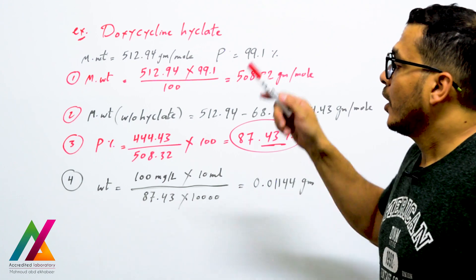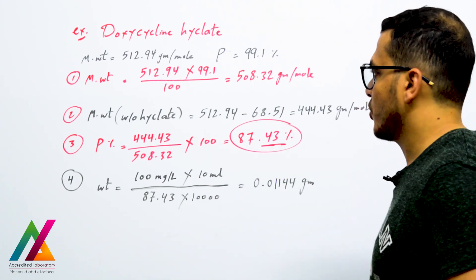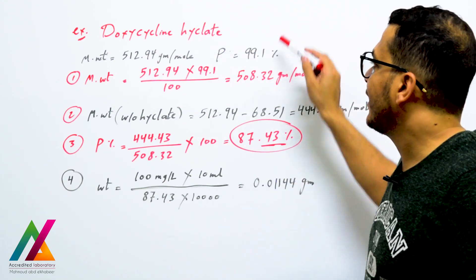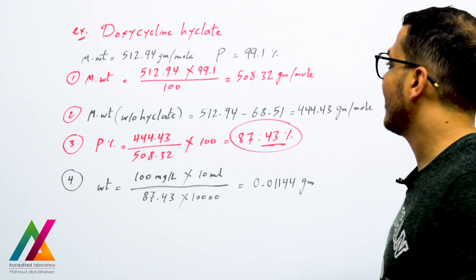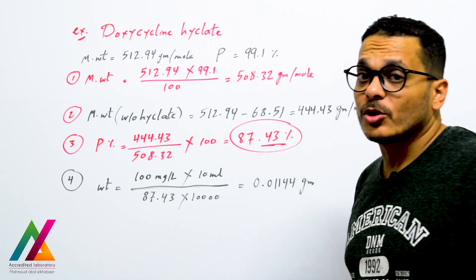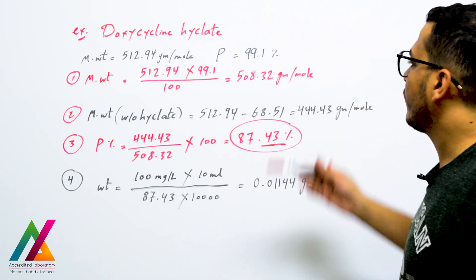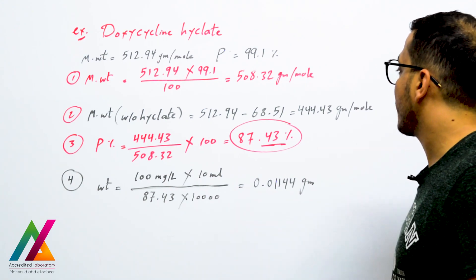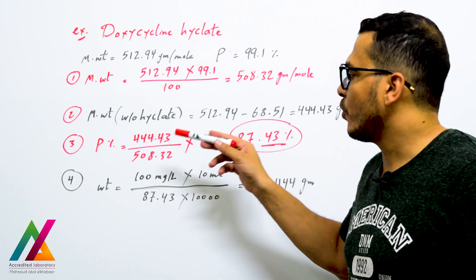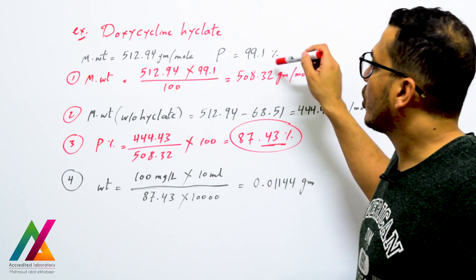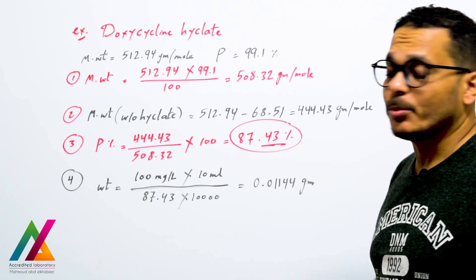Another example: doxycycline hyclate. The molecular weight of this compound is 512.94 g/mol, and the purity as in the certificate is 99.1%. First, calculate the molecular weight at 99.1% purity: 512.94 × 99.1% / 100. Then calculate the molecular weight for doxycycline only, without hyclate: 512.94 − 68.51 = 444.43 g/mol. Then calculate the exact purity: molecular weight without hyclate divided by molecular weight at 99.1% purity, multiplied by 100, equals 87.43%.